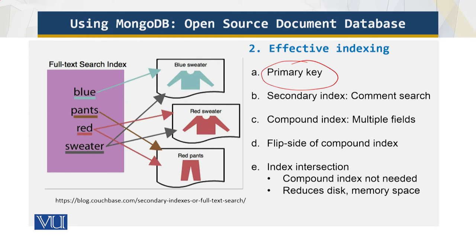There are many applications where primary key concepts don't work directly. For example, if I am looking for halim and want to search for which recipe is good by looking at comments, I need MongoDB's secondary index. Using the secondary index, I can search and get feedback about halim.